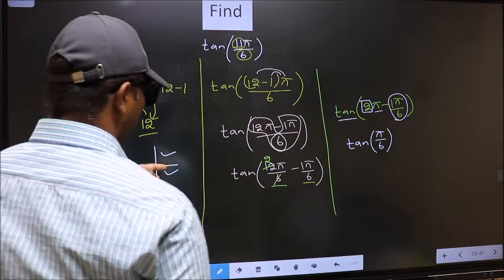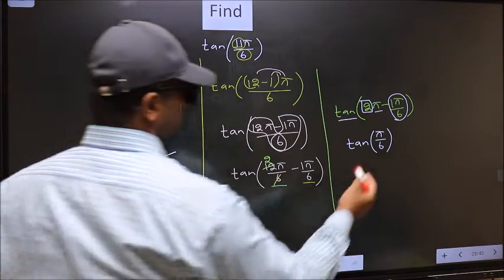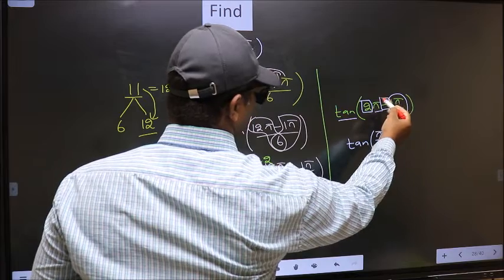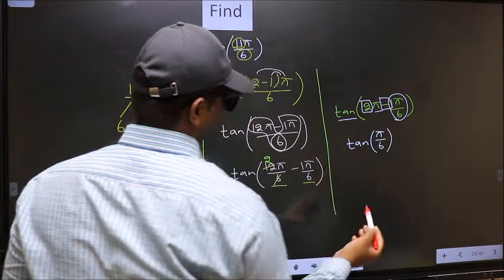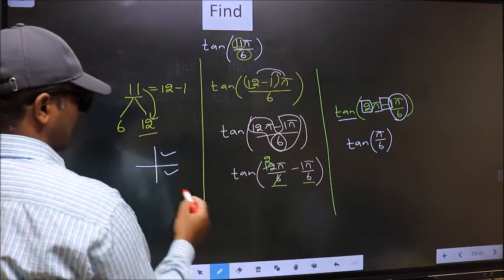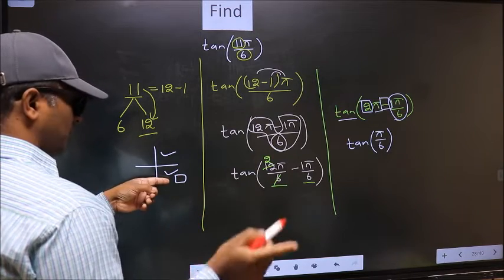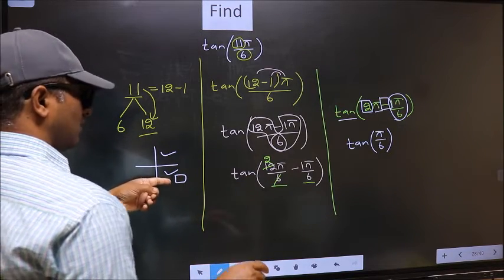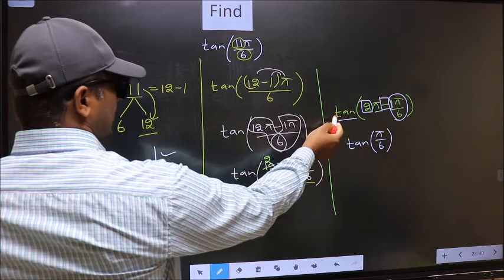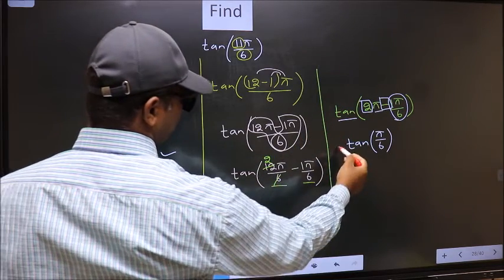So now to select the quadrant, we should look at this symbol. Here we have negative. That means the angle lies in the fourth quadrant. And in the fourth quadrant, tan is negative. So we should put negative.